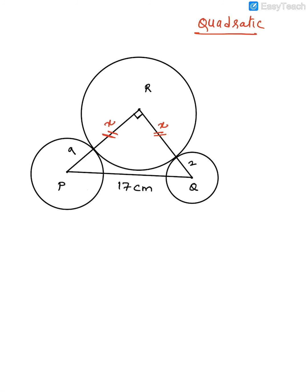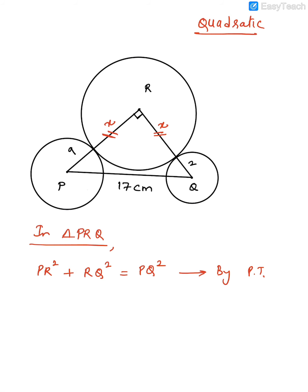Apply Pythagoras theorem in triangle PRQ: PR² + RQ² = PQ². So (x + 9)² + (x + 2)² = 17². Solve for x and you get x = 6 cm. Since this is a quadratic equation, you get two answers; the other answer is negative, which is not possible for a radius, so it's rejected.